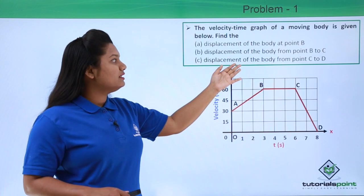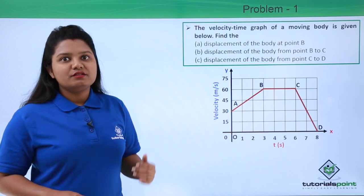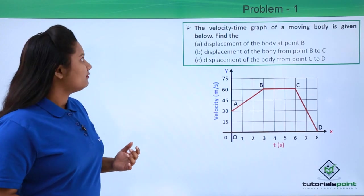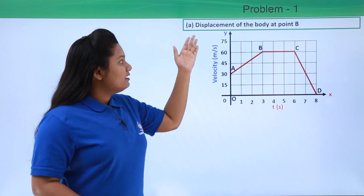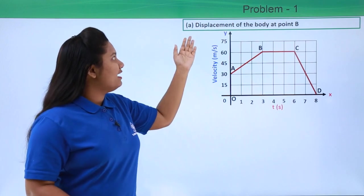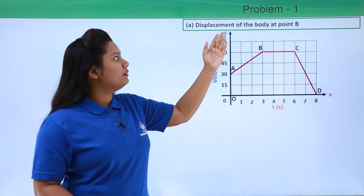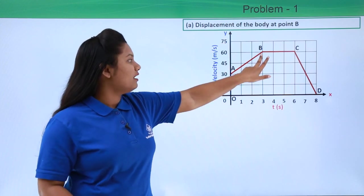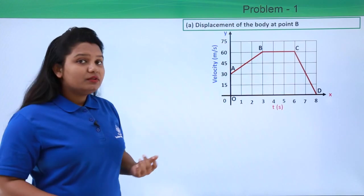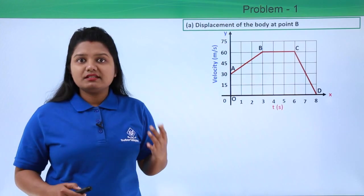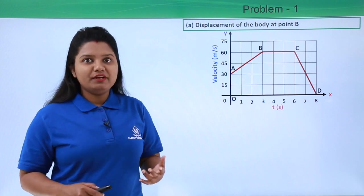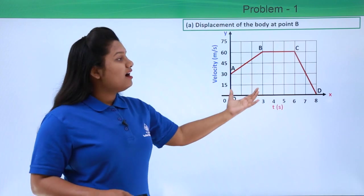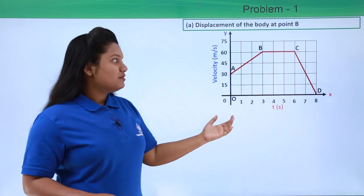We have a velocity-time graph from which we need to calculate all three displacements. The first part is to find the displacement of the body at point B. We know that we can find the displacement of a body at any point by calculating the area under the graph.